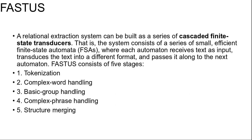Fastus consists of five stages: first, tokenization; second, complex word handling; third, basic group handling; fourth, complex phrase handling; and fifth, structure merging. The first stage, tokenization, segments the stream of characters into tokens — words, numbers, and punctuation. For English, tokenization can be fairly simple: separating characters at whitespace or punctuation does a fairly good job. Some tokenizers also deal with markup languages such as HTML, SGML, and XML.